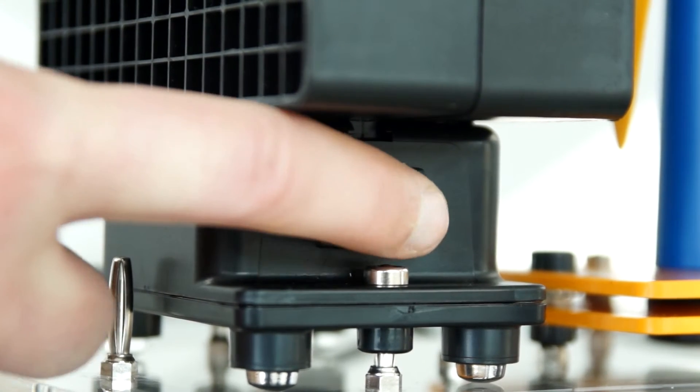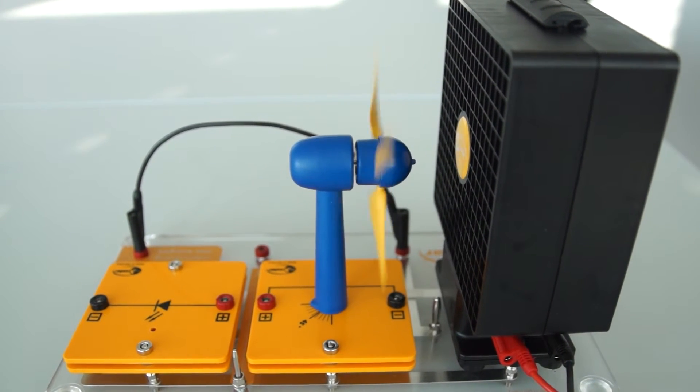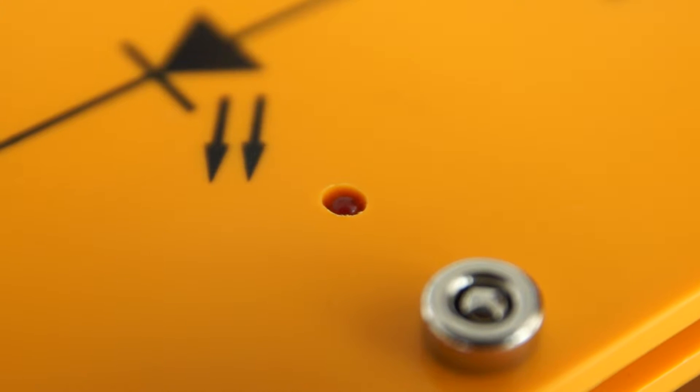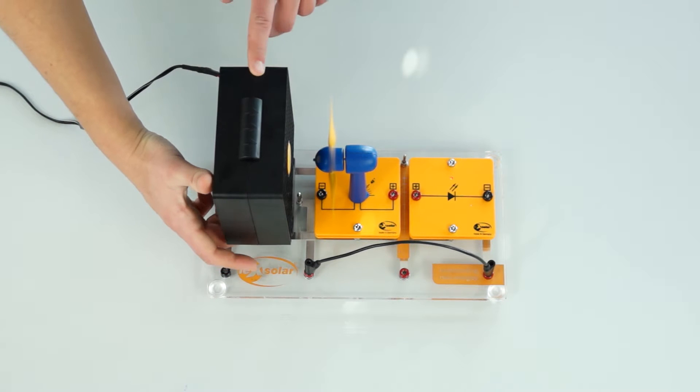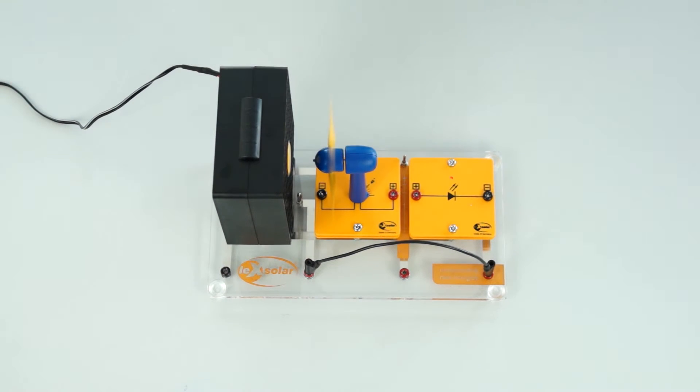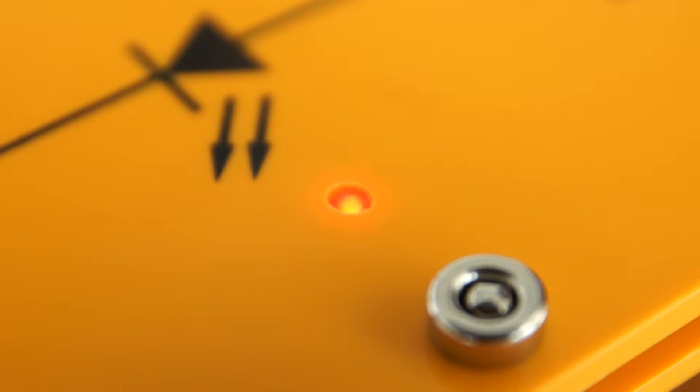We turn on the wind machine and observe what happens. First the wind turbine begins to rotate and then the LED starts to light up. Turning off the wind machine again the wind turbine is turning slower and the LED stops lighting up.